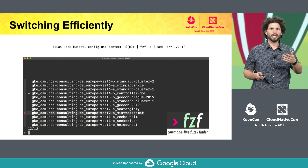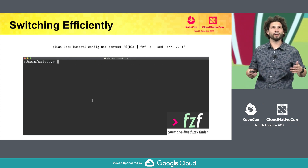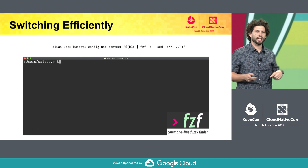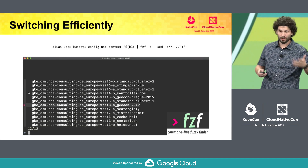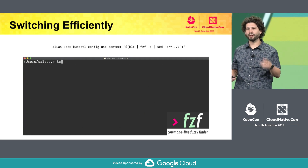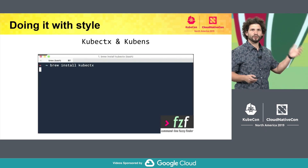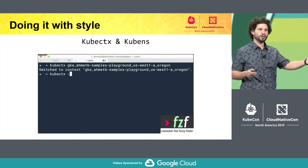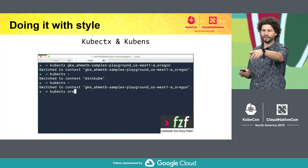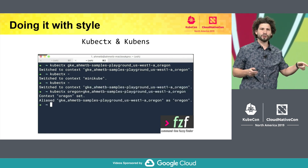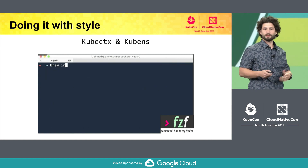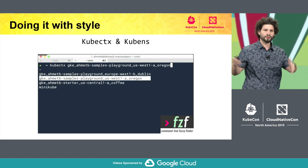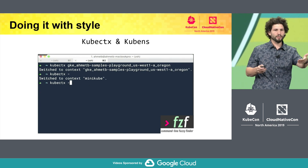There is a more efficient way: you can write an alias and use tools like the command-line fuzzy finder to make your life easier. With a three-letter alias and fzf, you get a list of options and select the cluster you want with your arrow keys. But you can do this with even more style — you can install kubectx and kubens to switch contexts and namespaces. Even using fuzzy finder, these tools come with extra features: you can go to the previous context with dash, and you can create shorter name aliases for your contexts so you don't have to remember long strings.